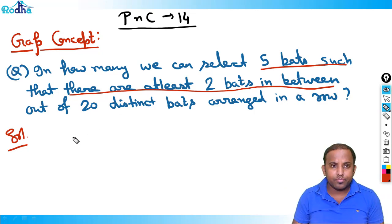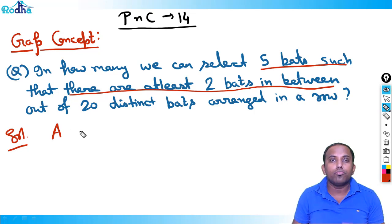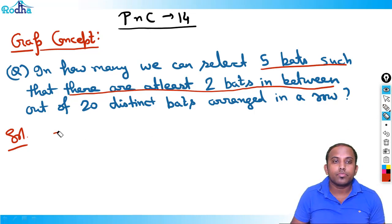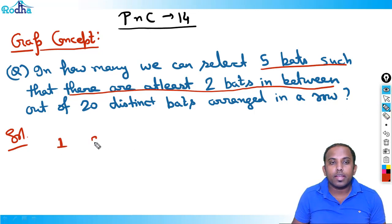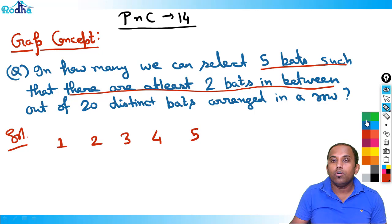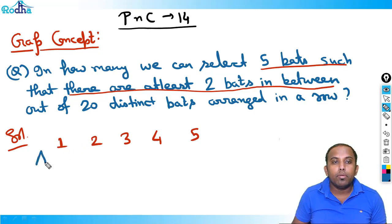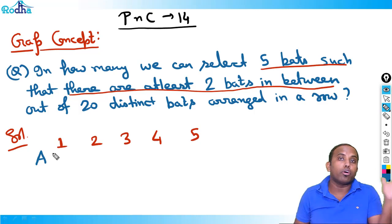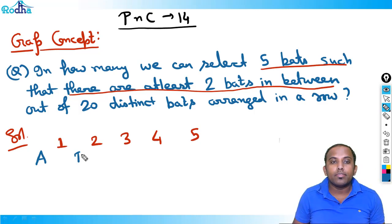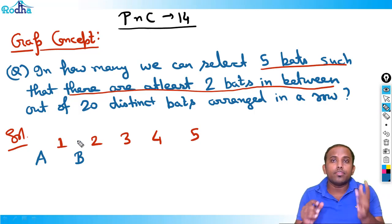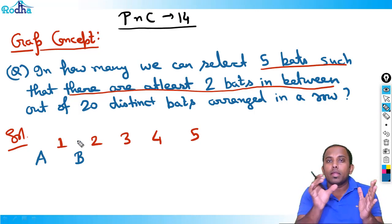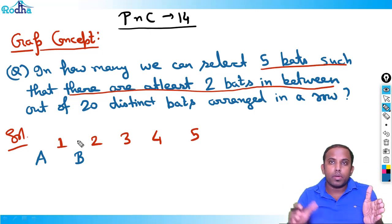So how to select that? Let's say this is my first bat, second bat, third bat, fourth bat, and fifth bat. Let A be the number of bats before the first bat, and B be the number of bats in between the first and second bat — that gap between picking first bat and second bat.